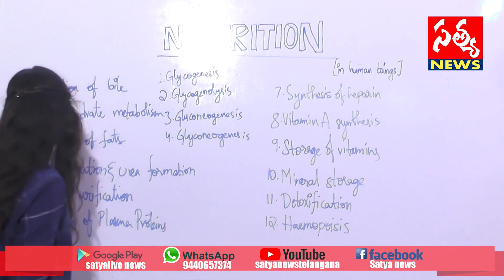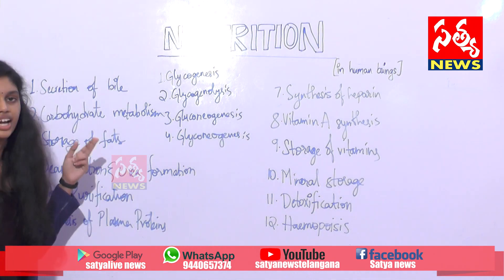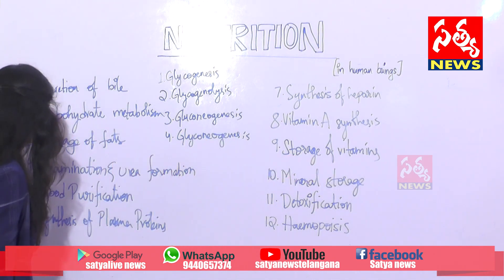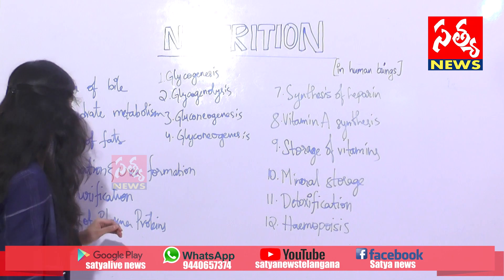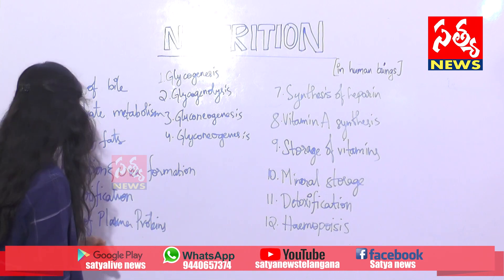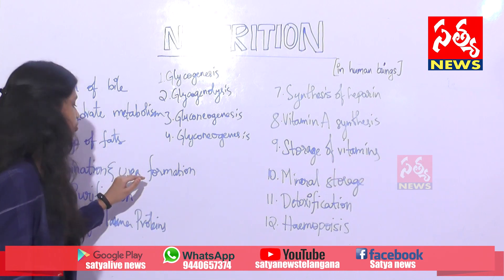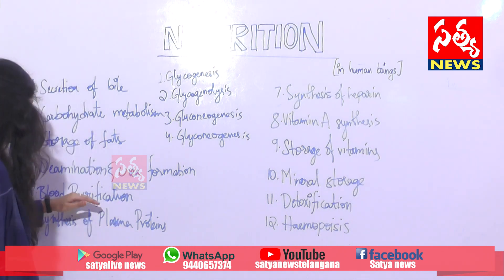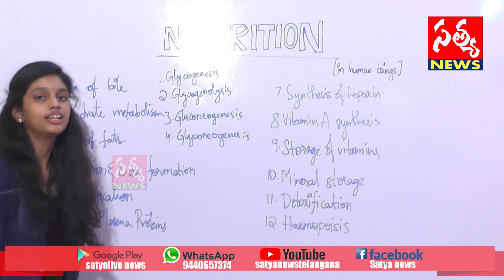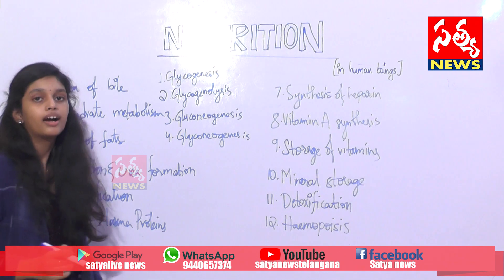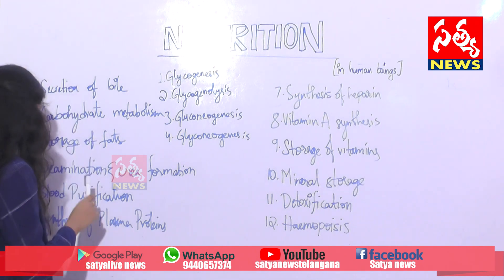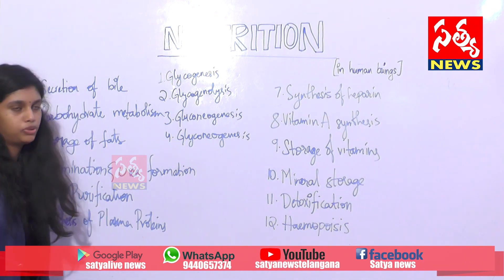Next: deamination and urea formation. Deamination is the process of converting the toxic amino acids into urea. Next is blood purification - the liver excretes the dead blood cells, and this is called blood purification.